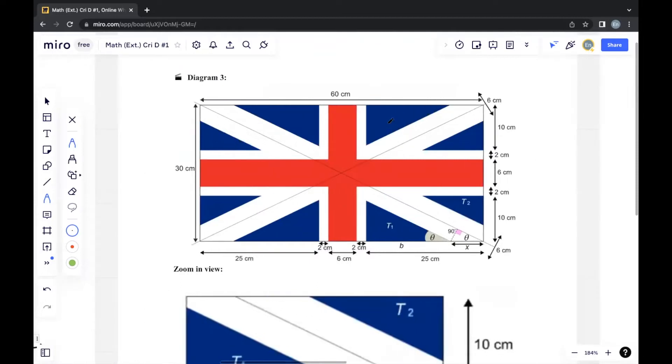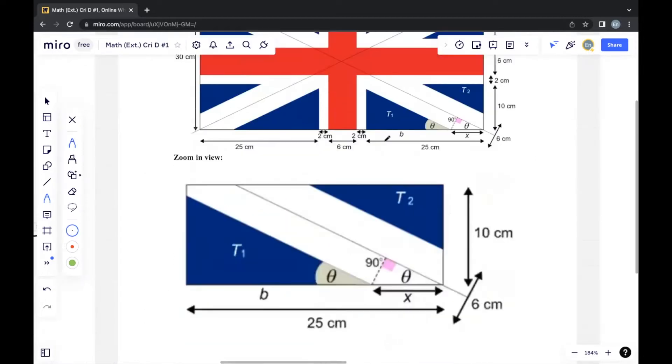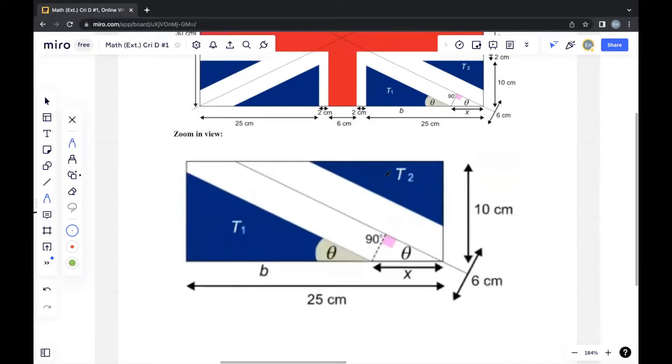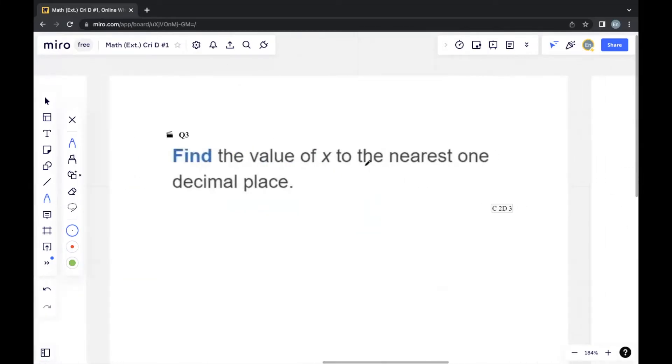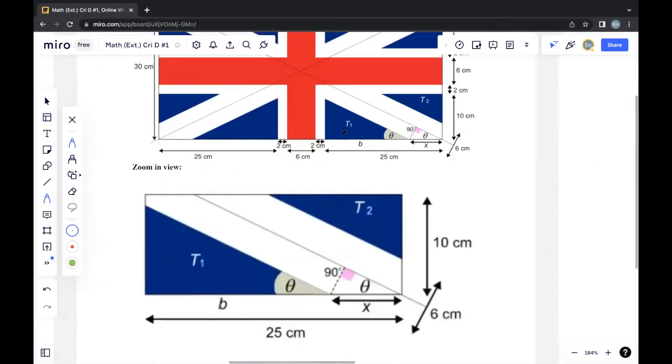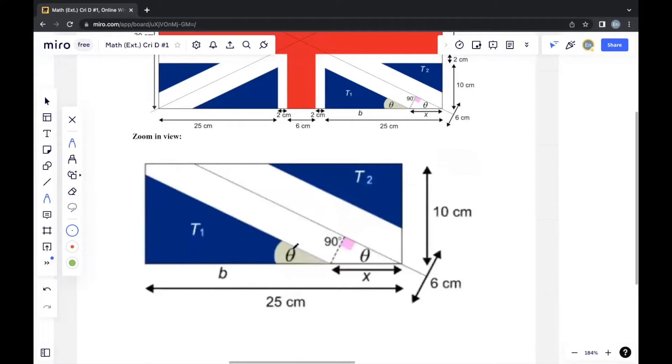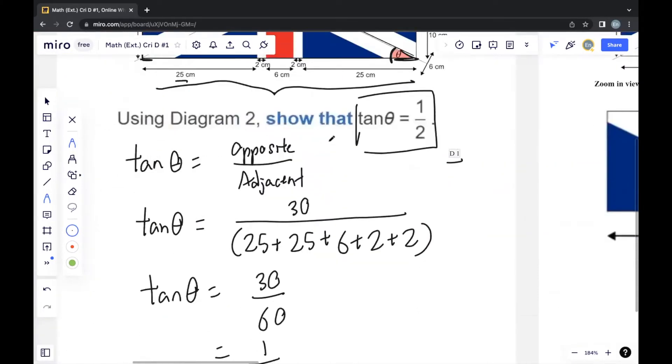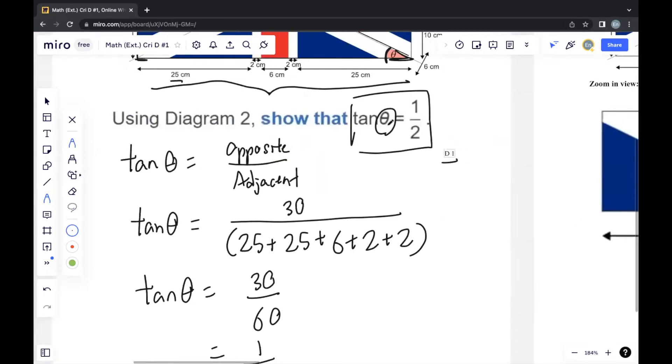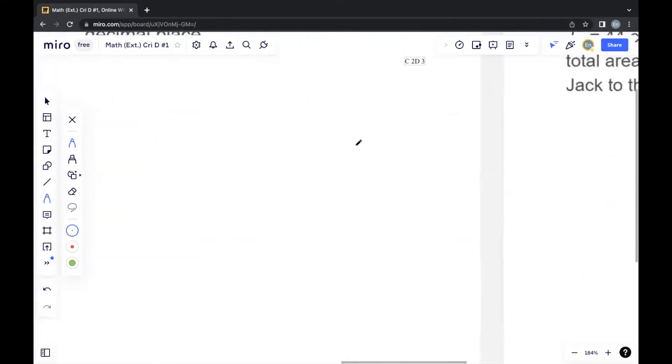Moving on to diagram 3. They show us the same diagram, but with an addition to this right-angled triangle through a zoom-in view. Find the value of x to the nearest one decimal place. We can see that in the zoom-in view, they actually use theta, which means they want us to use the previous value that we found—or actually, we showed it. But they want us to find the value of theta.